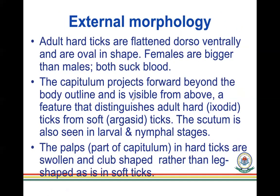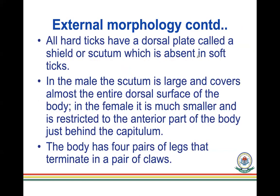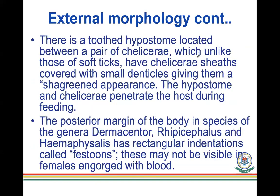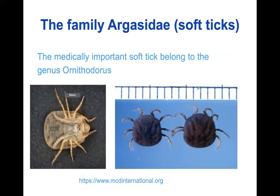The capitulum visible from above distinguishes hard ticks from soft ticks. Hard ticks have a scutum — also known as the shield — which is also seen in larval and nymphal stages. The palps of the capitulum in hard ticks are swollen and club-shaped, rather than leg-shaped as in soft ticks.